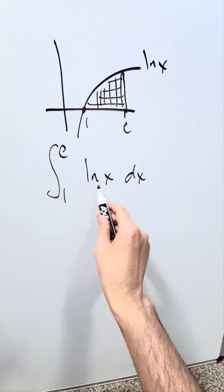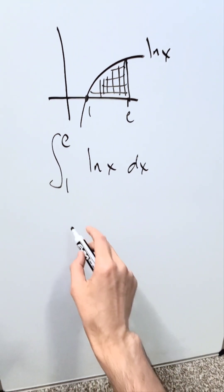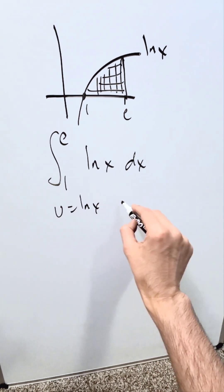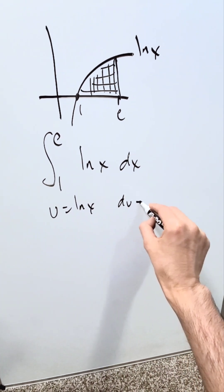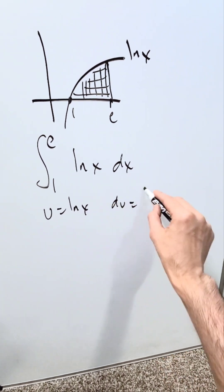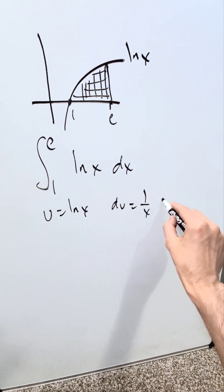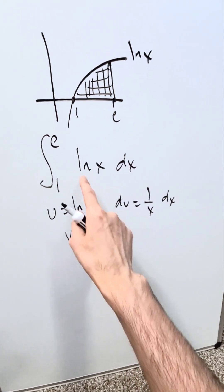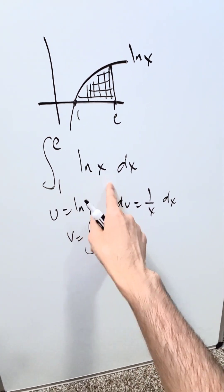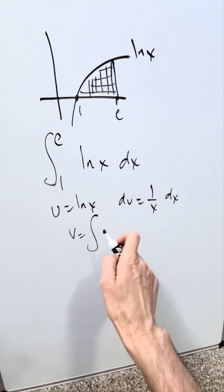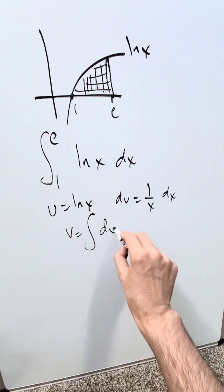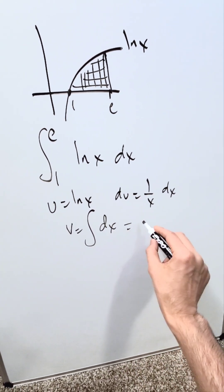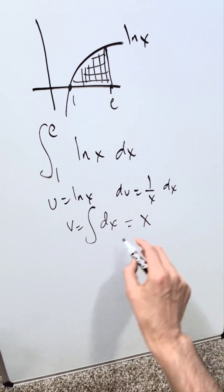Use integration by parts to determine the antiderivative. u is equal to natural log x, then du is equal to the derivative of that: 1 over x, and then dx. v is equal to the integral of what remains. You've already used this for substitution, so nothing remains other than a 1, and the integral of that is going to be x.